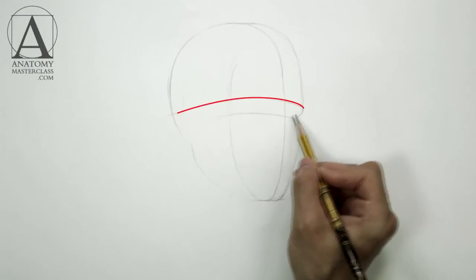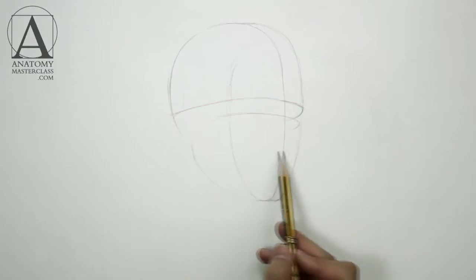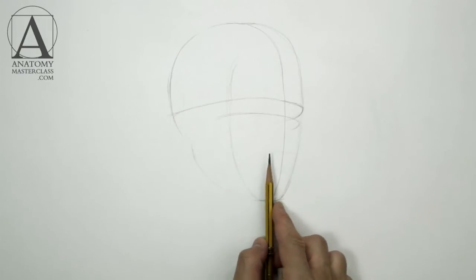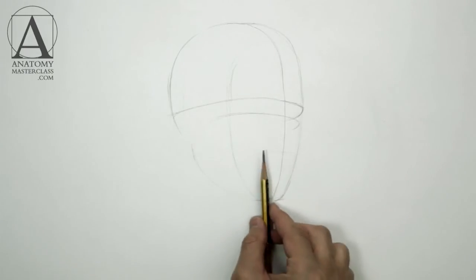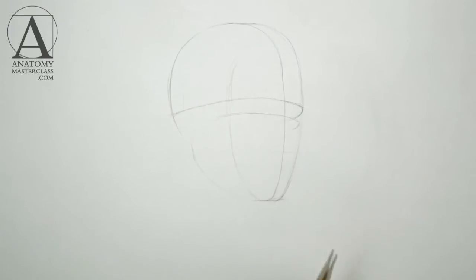Another important line of the head is the brows line. This line is also seen above the horizon level and therefore is curved upward. You may notice that this line is extended further to the side. This will help us to position the ear correctly.